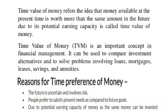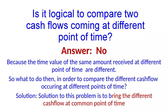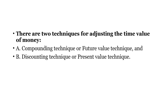The purchasing power of money gets reduced over a period of time. That is why most people in the world prefer to receive money today rather than at some other time in future. As the value of the same amount is different if received at different points of time, we cannot directly compare two cash flows occurring at different points of time. To make them comparable, we should bring their values to a common point of time.